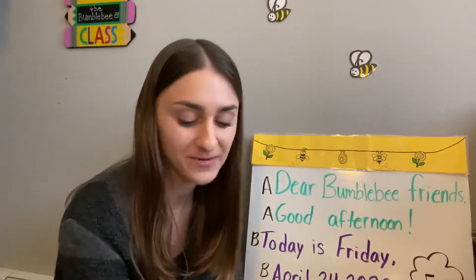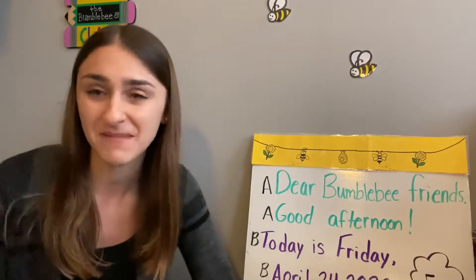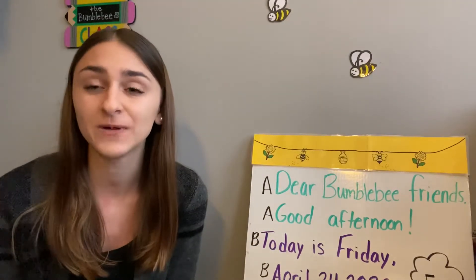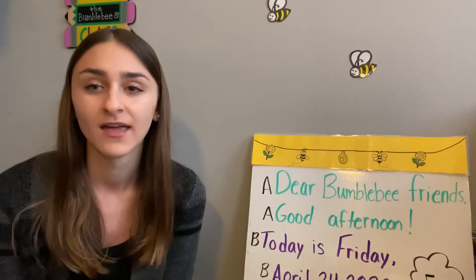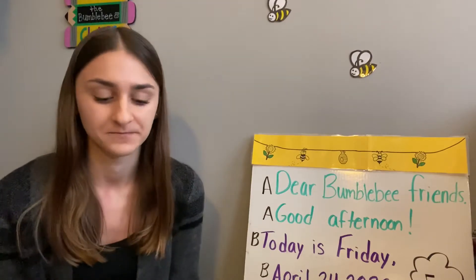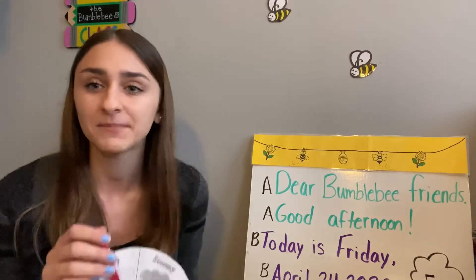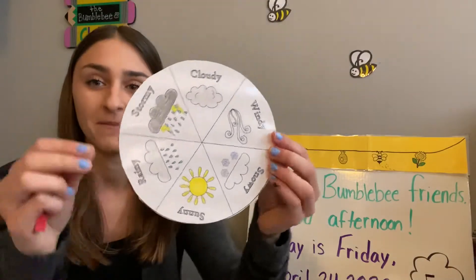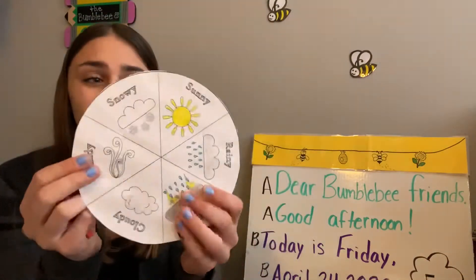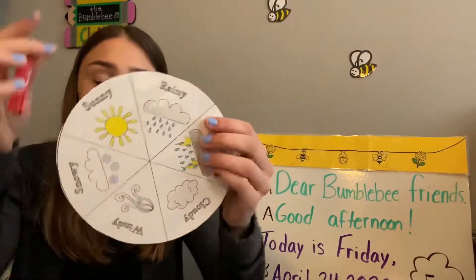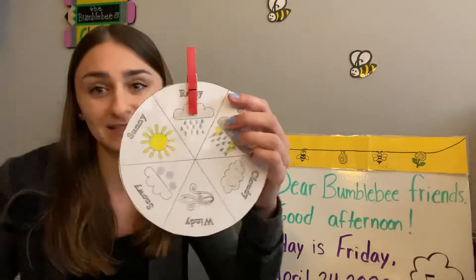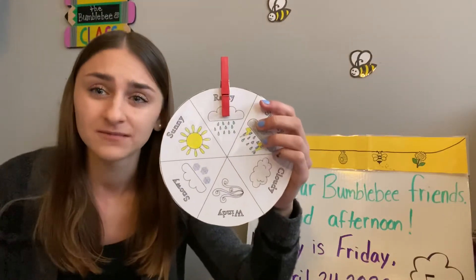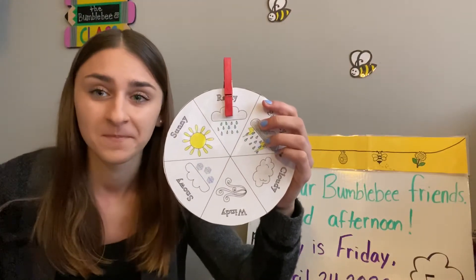Okay, let's take a look at our weather wheel if you have one — if not, you could take a look at mine. So take a moment to look outside your windows. What is the weather like today? What's it like by you? By me, it's a little bit rainy. Unfortunately, it's a little rainy today by me. Is it rainy by your house?